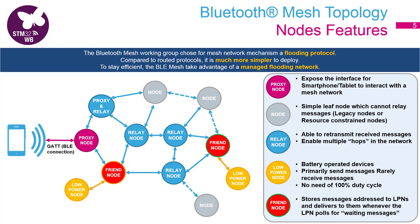The friend node will store messages destined for the low power node and deliver them on request. The low power node needs to establish a relationship with a friend node, and this is fully defined inside the BLE mesh specification.